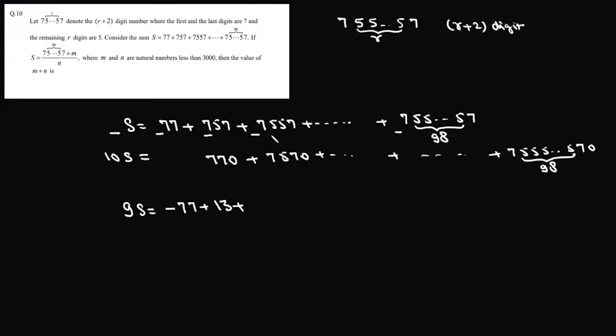Now here also 70 minus 57 is again 13. I will continue up to this term which is 13 plus 755598 times and then this is 70. Now first thing is how many 13s do we have? So we have started with 1 and we have gone up to 98 fives. So this 13 appeared 98 times.